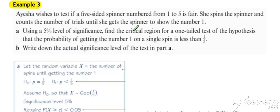Example 3. This time we're looking at the critical region. We've got a spinner numbered 1 to 5, so we've got a p-value of one-fifth. One-tailed test of hypotheses that the probability on a single spin is less than a fifth, so our alternative is less than.